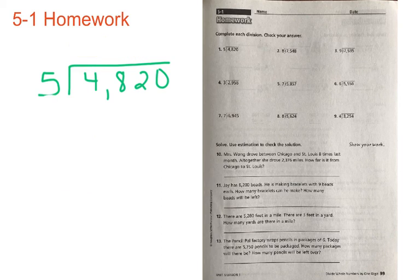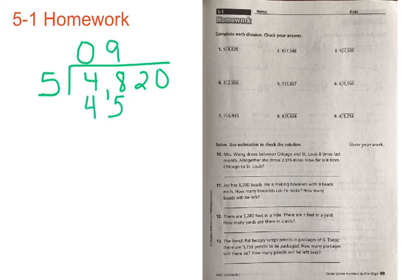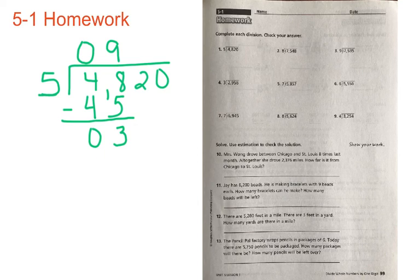Now we can get started. We're going to ask how many times 5 can go into 4,820. We'll start at the beginning — how many times can 5 go into 4? Zero, because 5 is larger than 4. How many times can 5 go into 48? Nine, because 5 times 9 is equal to 45. We line up our 45 below the 48 and subtract: 8 minus 5 equals 3, and 4 minus 4 equals 0. We check that our remainder of 3 is less than 5 — and it is.